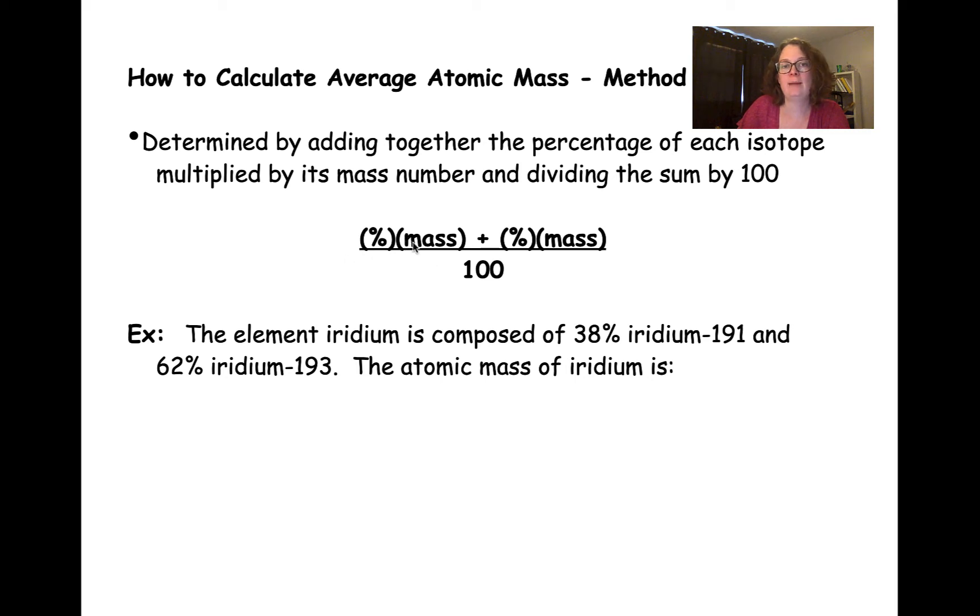we're going to take the percentage times the mass of our individual isotopes and add them together, and then divide that entire number by 100.